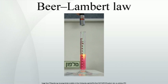The law tends to break down at very high concentrations, especially if the material is highly scattering. If the light is especially intense, nonlinear optical processes can also cause variances. The main reason, however, is that at high concentrations the molecules are closer to each other and begin to interact with each other. This interaction will change several properties of the molecule, and thus will change the molar absorptivity. If the absorptivity is different at higher concentrations than at lower ones, then the plot of the absorbance will not be linear, so you can only use it when all concentrations are low enough that the absorptivity is the same for all of them.